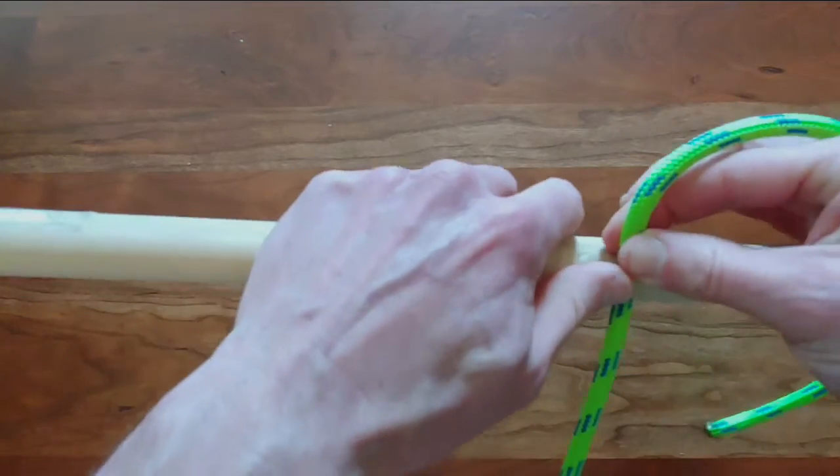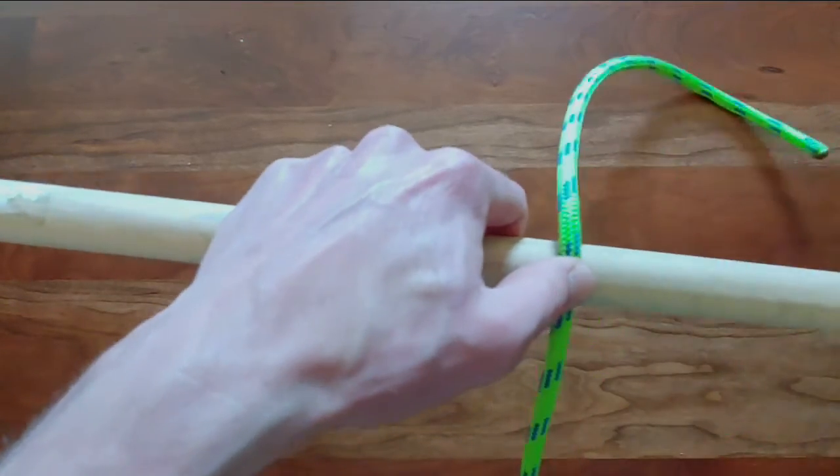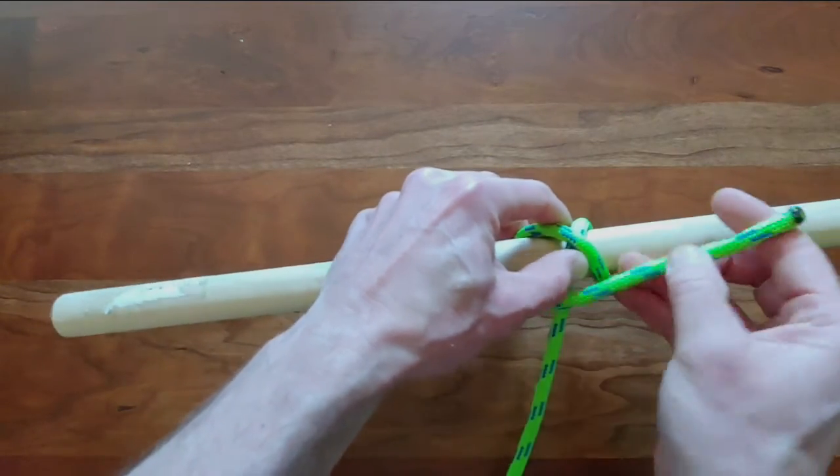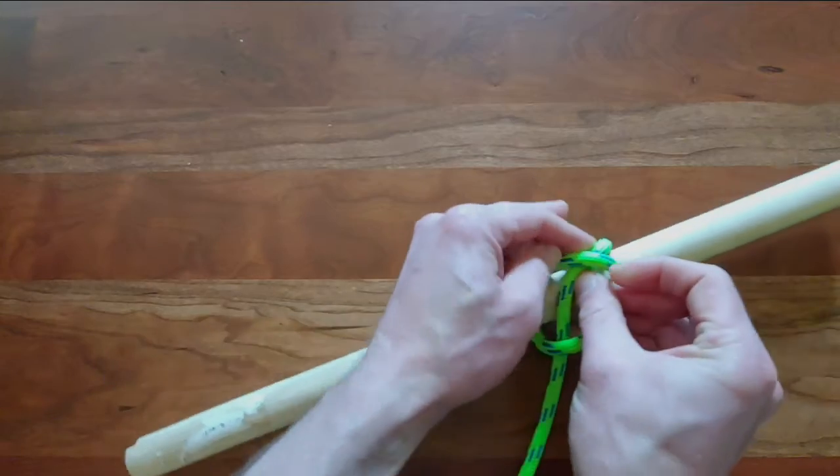And then I'm going to go ahead and tie my constrictor knot around the dowel. Now this isn't really a tutorial on the constrictor knot. You can find a good one in lots of other places on YouTube.